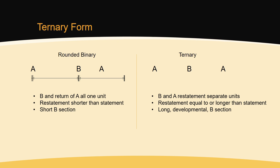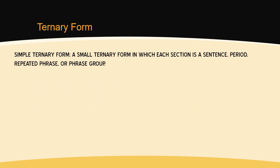Theorists often argue over whether rounded binary form is a binary or a ternary form. What's most important, though, is to understand the differences between the function of the B and the return of the A sections in both rounded binary and ternary form. Ternary forms can be simple, meaning that they are small, and that each section is a sentence, period, repeated phrase, or phrase group.